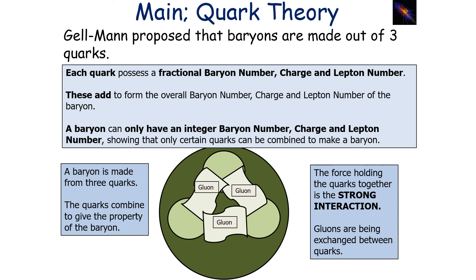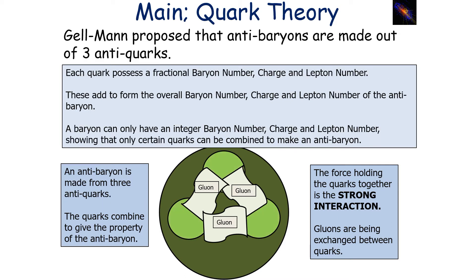Gell-Mann proposed that baryons are made out of three quarks. Each quark possesses a fractional baryon number, a fractional charge, and a lepton number. These add to form the overall baryon number, charge, and lepton number of the baryon. A baryon can only have integer baryon number, charge, and lepton number, showing that only certain quarks can combine to make a baryon. Adding up the fractional baryon number, charge, and lepton number of the quarks gives the overall properties of that baryon.